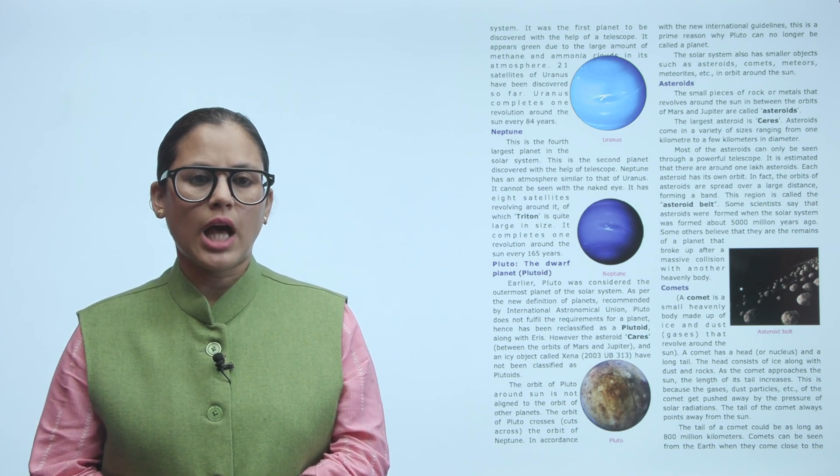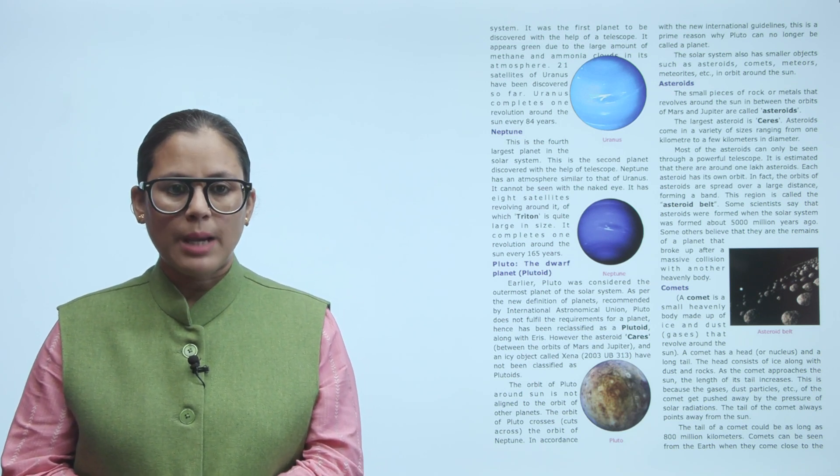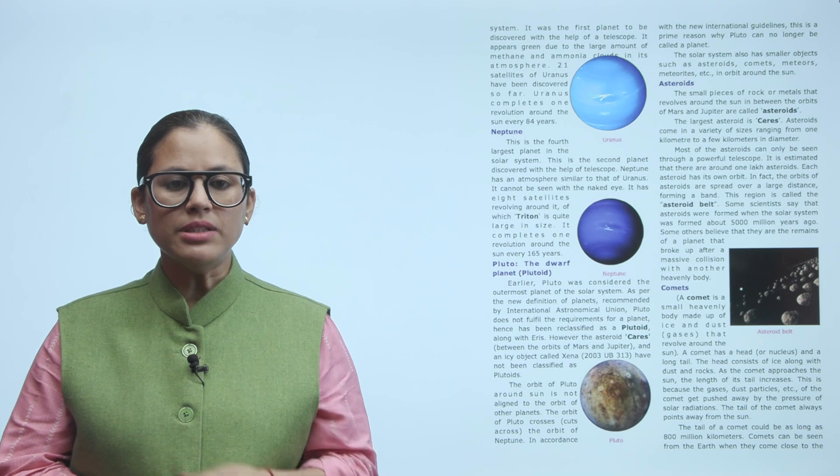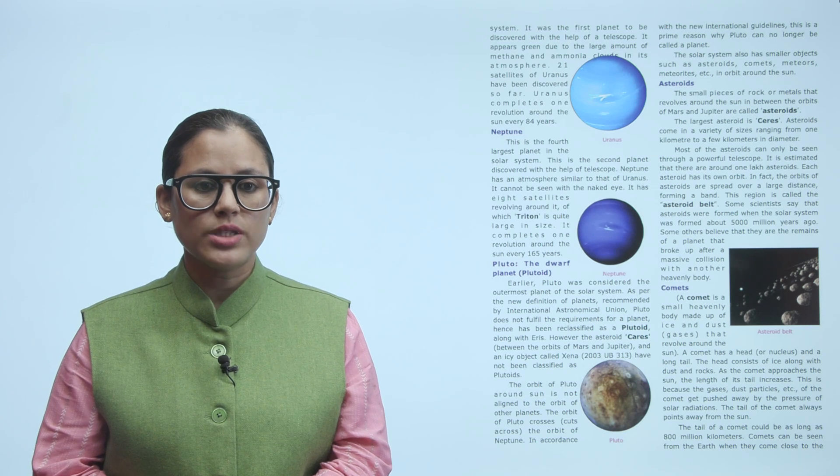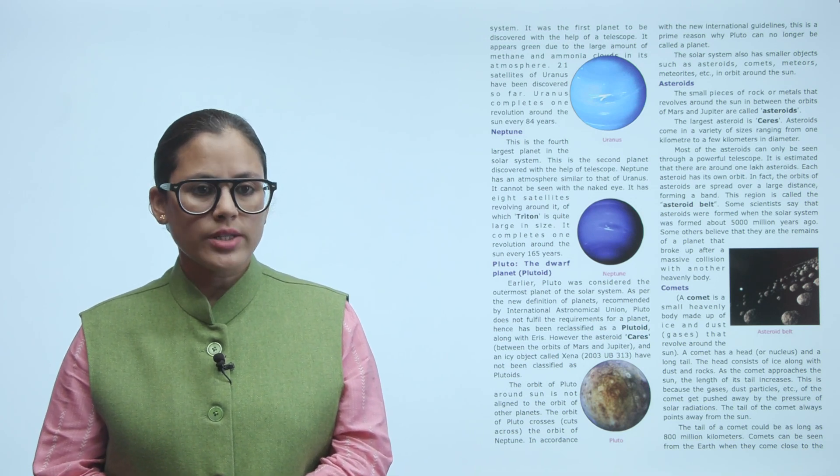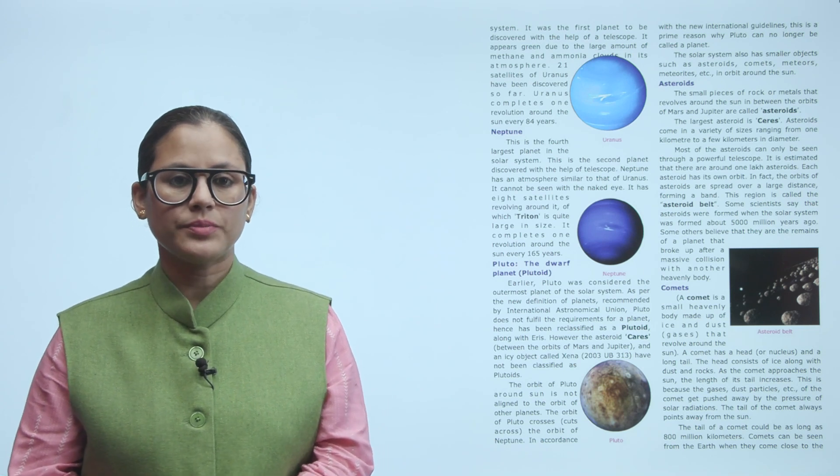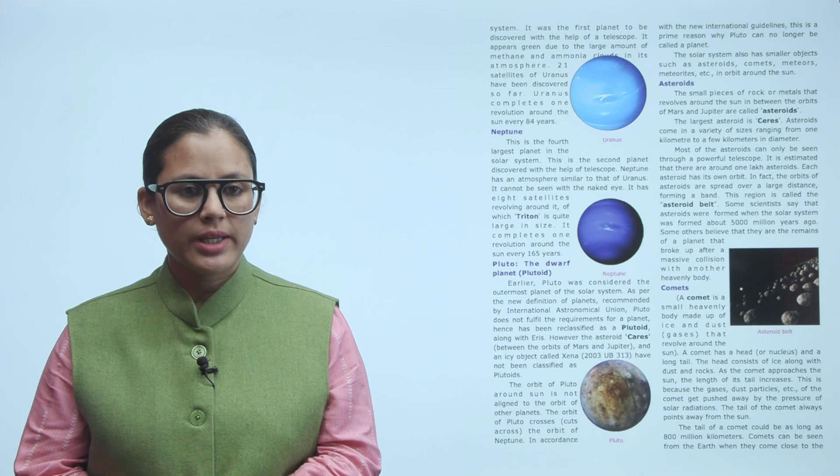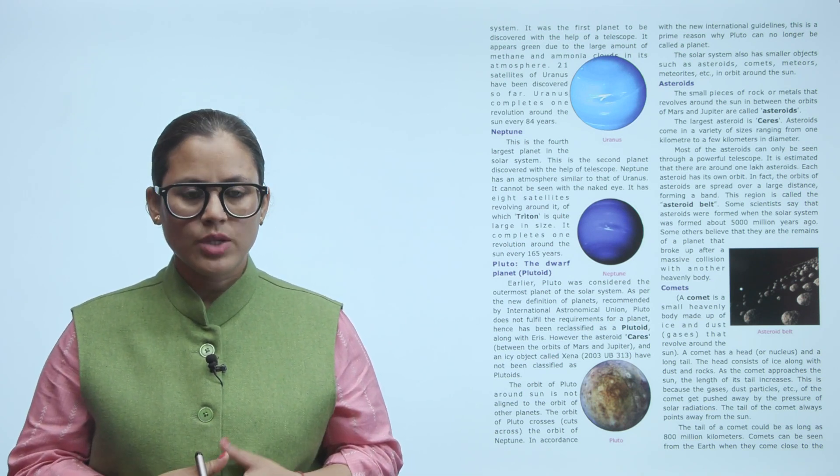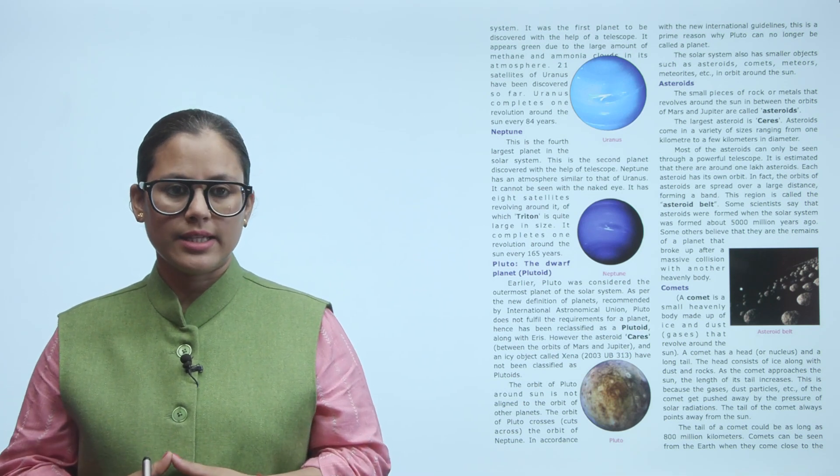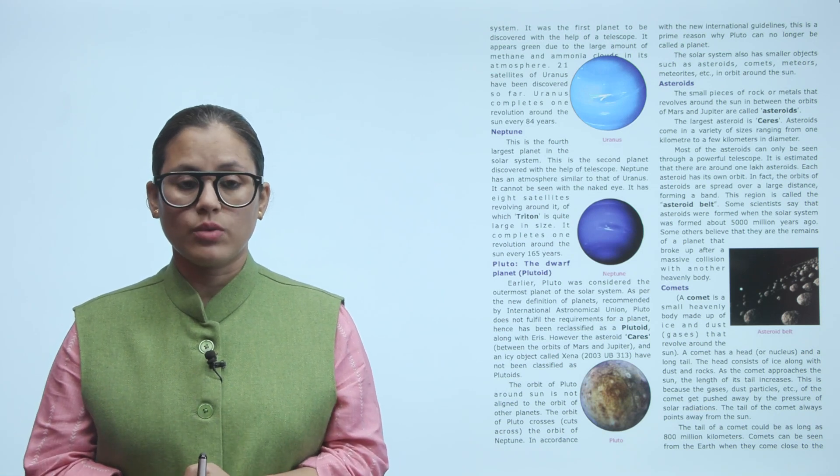Neptune: This is the fourth largest planet in the solar system. This is the second planet discovered with the help of telescope. Neptune has an atmosphere similar to that of Uranus. It cannot be seen with the naked eye. It has eight satellites revolving around it, of which Triton is quite large in size. It completes one revolution around the sun every 165 years.